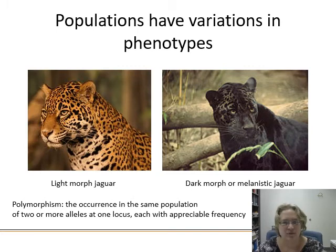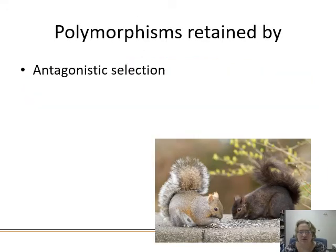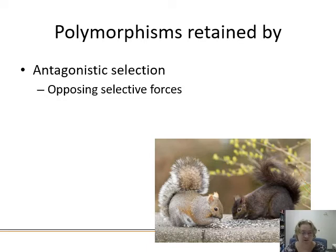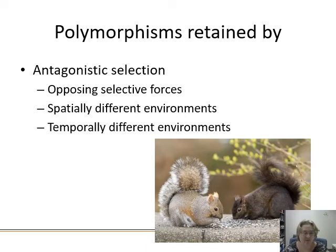Polymorphism refers to populations having variation in phenotypes — like jaguars having light and dark (melanistic) morphs. Two or more alleles each with appreciable frequency are maintained in the population. Antagonistic selection involves opposing selective forces — for example, the predators chasing gray squirrels are not the same as those going after black squirrels. There may be spatially or temporally different environments at play, epistasis, differences across life cycle stages, or sexual dimorphism preferences. With so many forces pulling back into the population, neither morph can completely take over.